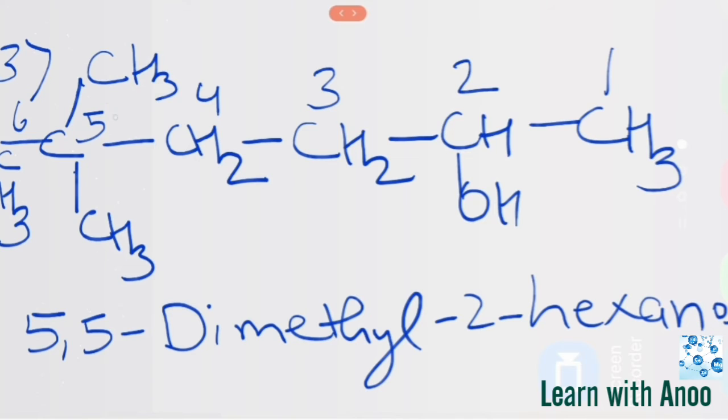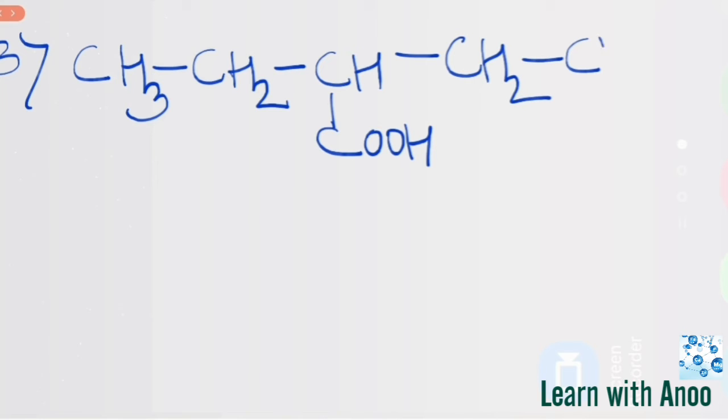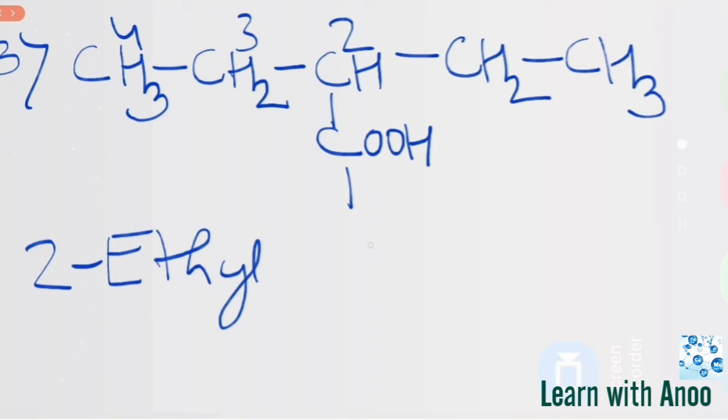Five, five-dimethyl-two-hexanol. Now next, butanoic acid.